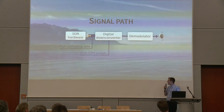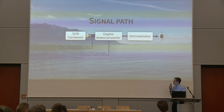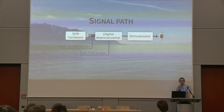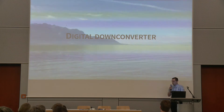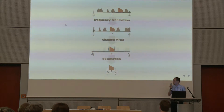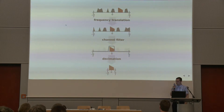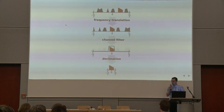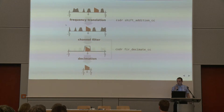The tricky part is the digital down converter because it works on the high sampling rate signal — the original IQ signal that the SDR hardware emits. The digital down converter shifts the signal of interest into the center, then runs a channel filter and does decimation, so we end up with only one channel selected from the original IQ signal.